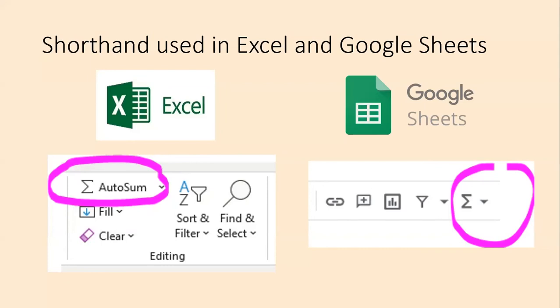If you use Excel or Google Sheets, you will notice that on their toolbars, there's a button with this letter. It's a shortcut button for the sum function that adds many cells together.